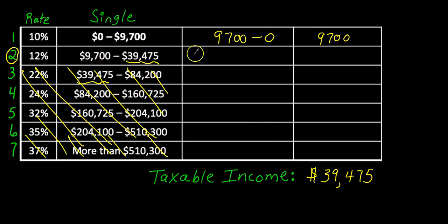They're the same number. So we'll subtract these two. $39,475 minus $9,700. And we've already done this in the previous problem. You get $29,775.